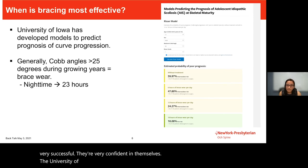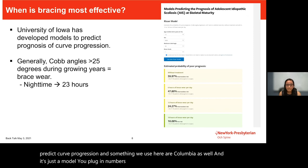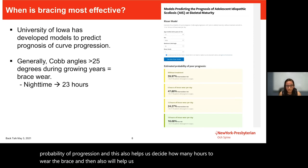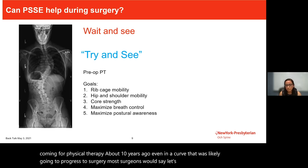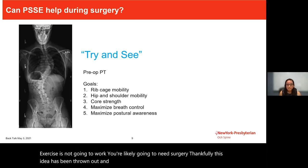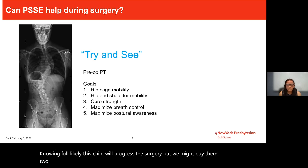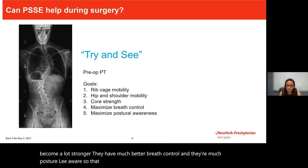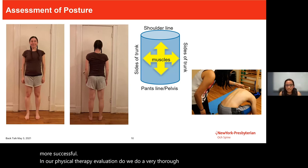The University of Iowa has been doing amazing work developing models to predict curve progression. We use this model at Columbia — you plug in numbers and get a good probability of progression, which helps decide how many hours to wear the brace and how often the child should come for PT. About 10 years ago, even for a curve likely progressing to surgery, surgeons would say to wait and see. Now surgeons are adopting a 'try and see' approach — knowing full well the child may progress to surgery, but buying two years in which the child becomes more mobile, stronger, with better breath control and postural awareness, making recovery faster and more successful.